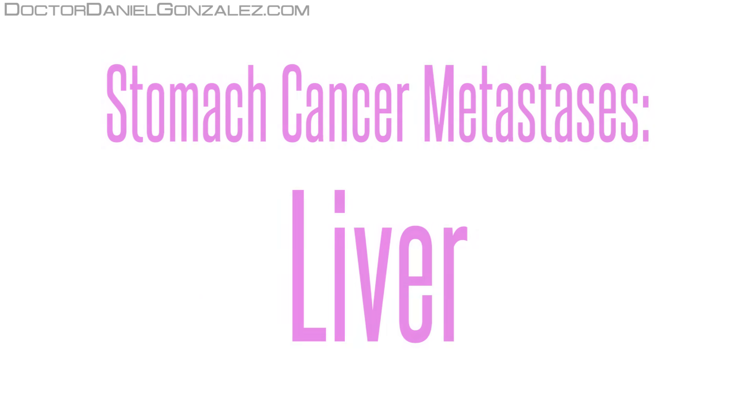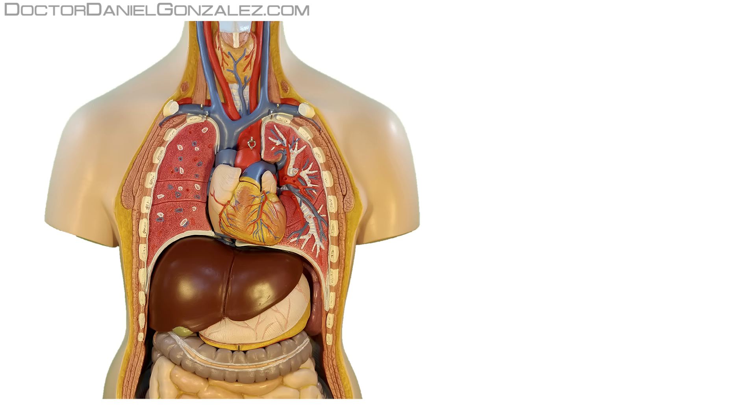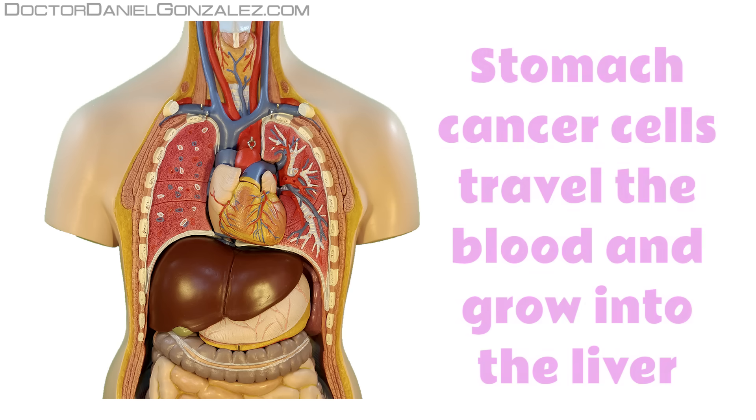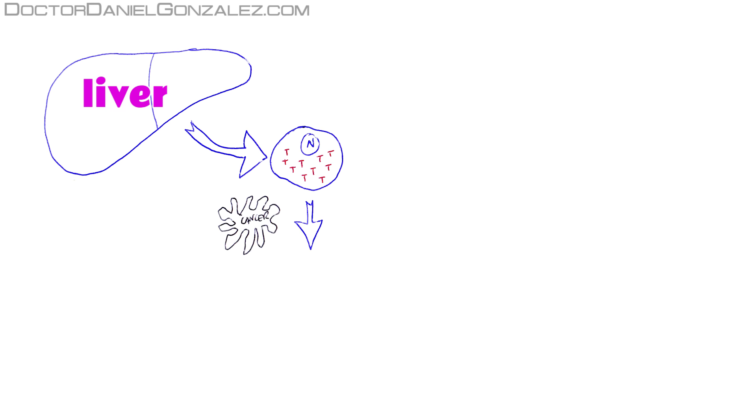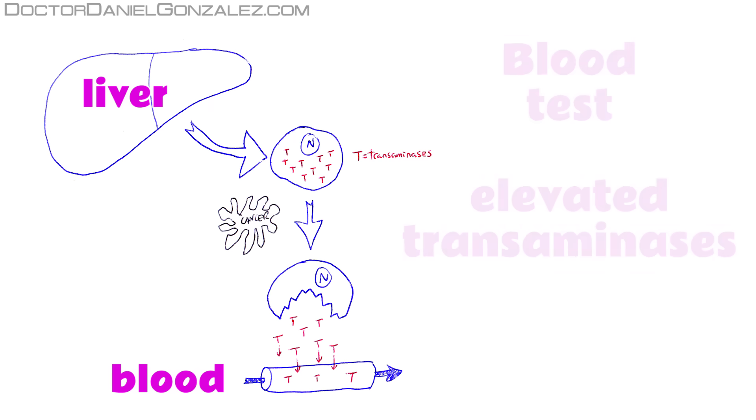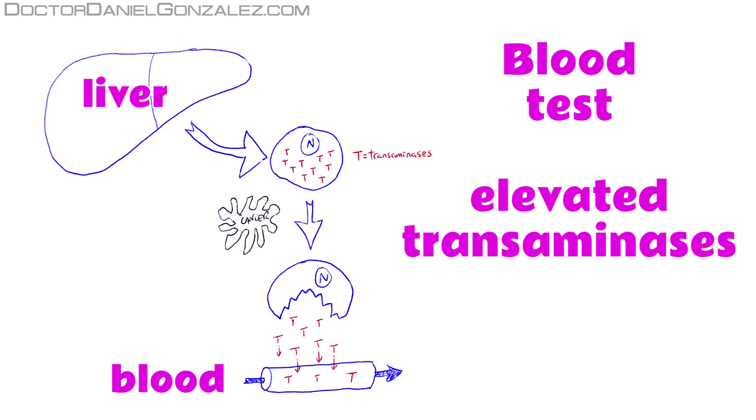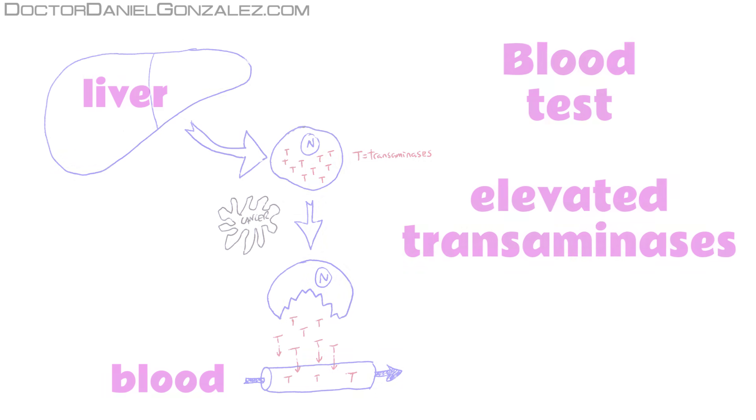Liver metastasis. When stomach cancer cells go to the liver and begin to grow, they begin to crush healthy liver cells. If broken, liver contents, which are transaminases, will be poured into the bloodstream. This will increase their blood concentration, as detected in a blood test.